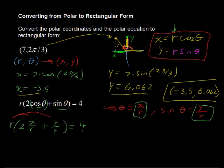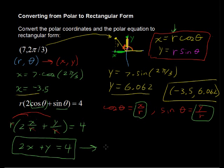And what happens when we distribute that r? Well, it cancels these out out of the denominator. So what we're left with then is just 2x + y = 4, a lot simpler than you may have thought it was going to be. And if you want to put that into slope intercept form, y = -2x + 4, you can do that as well. So we've converted polar coordinates and a polar equation into rectangular form.